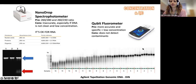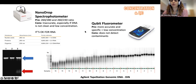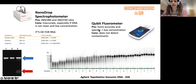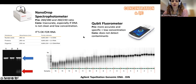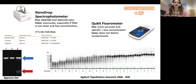Then we have a Qubit fluorometer. The Qubit is an alternative to the NanoDrop — the pro is it's more accurate and specific, especially for low-concentrated samples. However, it doesn't give you information about contaminants. If you're using a kit to extract your DNA/RNA, it's a controlled protocol and the Qubit is safe enough. But if you're performing a homemade protocol, information about contaminants may be important too.